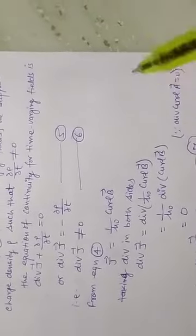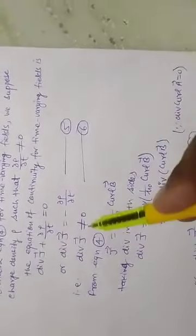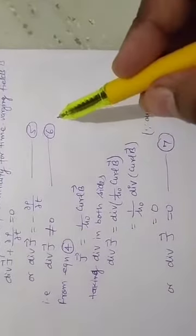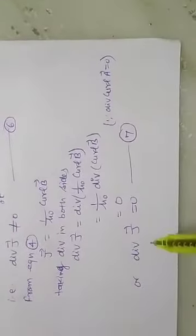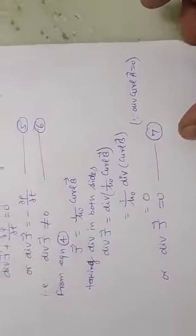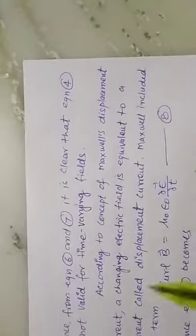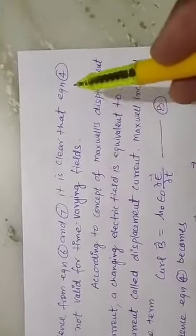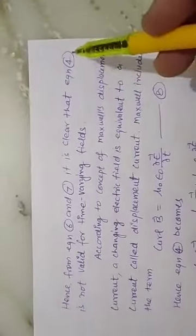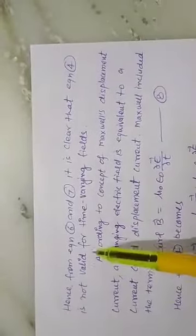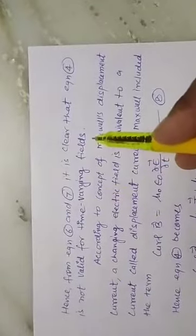These are two very important equations. Here divergence of J is not equal to zero (equation 6), and here divergence of J is equal to zero (equation 7). From equations 6 and 7, it is clear that equation number 4 is not valid for time-varying fields.